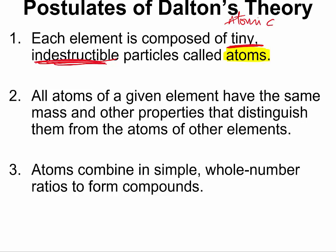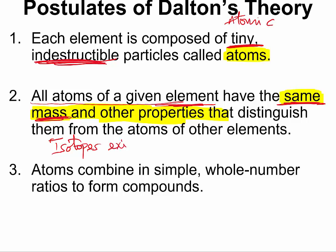The second Dalton's atomic theory is that all atoms of a given element will have the same mass, and all other properties will be the same for them — and that is how you will be able to distinguish them from the atoms of other elements. This theory was the biggest mistake made by John Dalton, because we now know that atoms of the same element can have different masses. We now know for sure that isotopes exist, and we will learn about isotopes in this chapter.